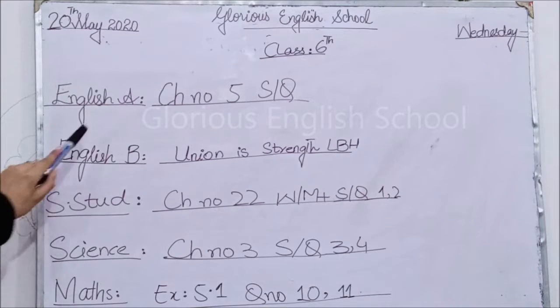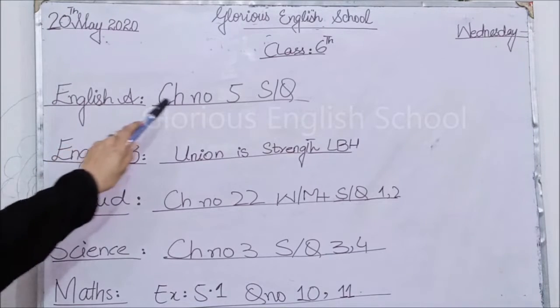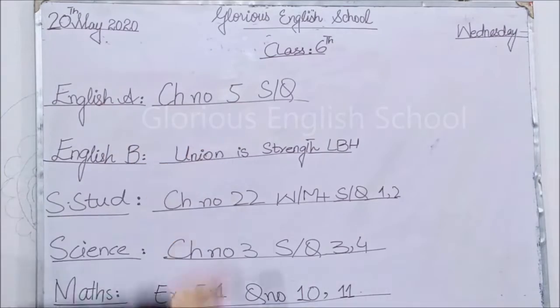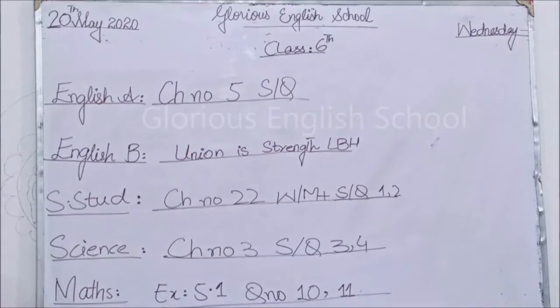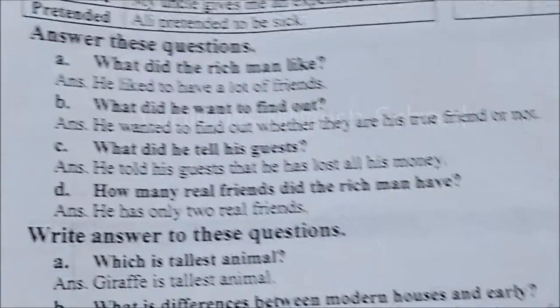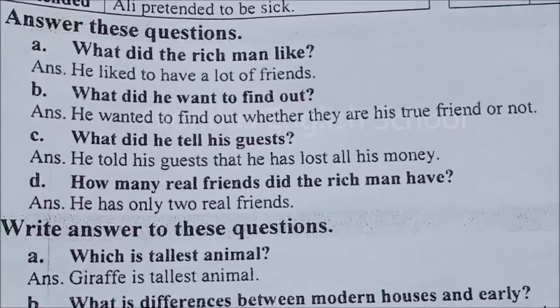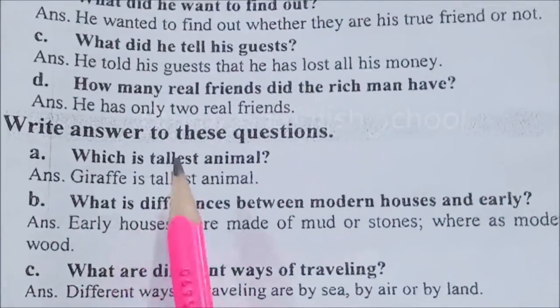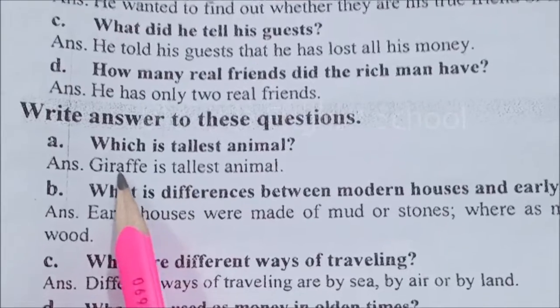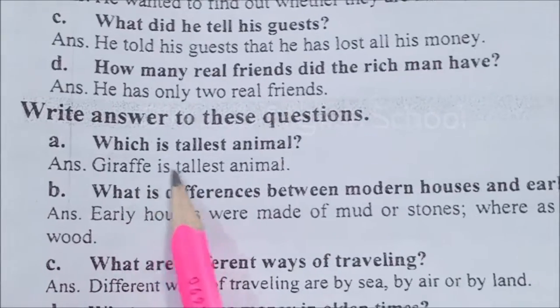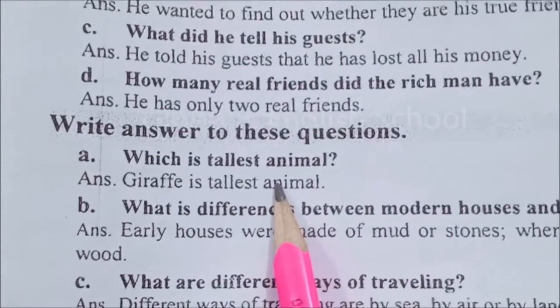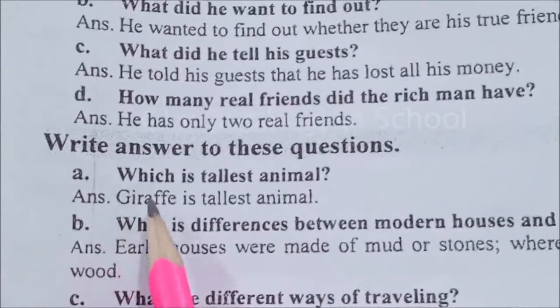Your first title is English, Chapter number 5, Short Questions. Open your notes. Question number one: which is the tallest animal? Sabse lamba janwar koon sa hai? Giraffe is the tallest animal. Zaraafah sabse lamba janwar hai.